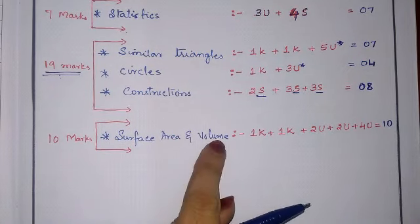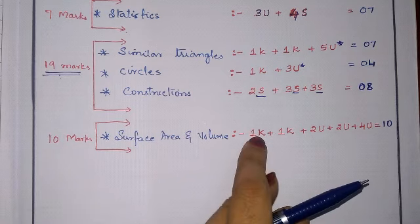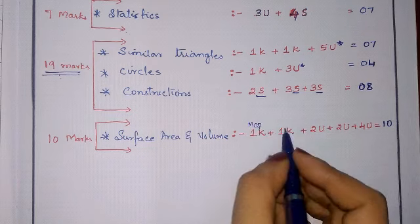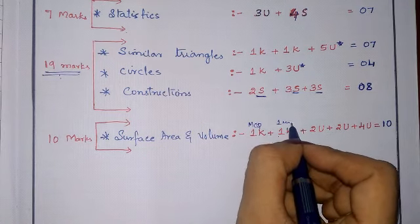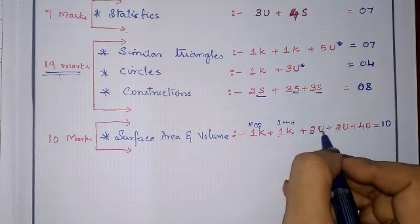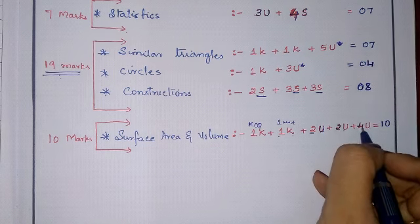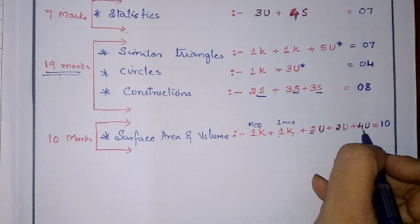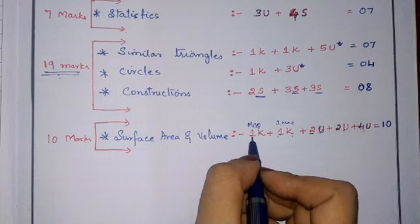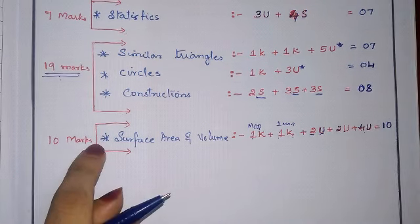For Surface Area and Volume — 10 marks: 1 MCQ (knowledge), 1 one-mark knowledge question, 1 two-mark understanding question, 1 two-mark understanding question, and 1 four-mark understanding question. Total 10 marks from Surface Area and Volume.